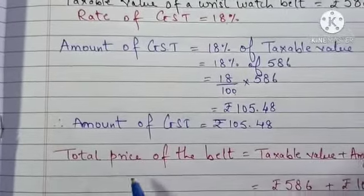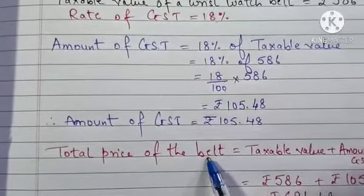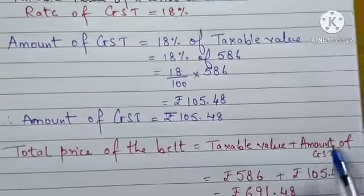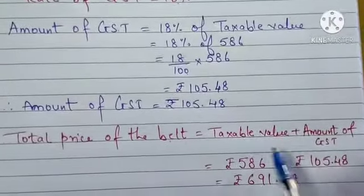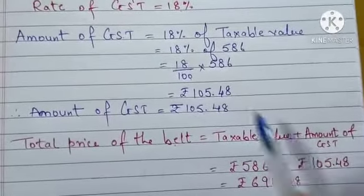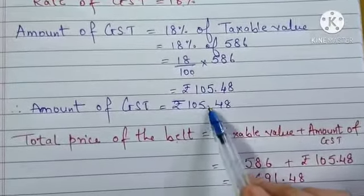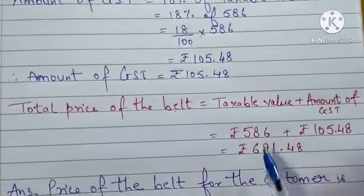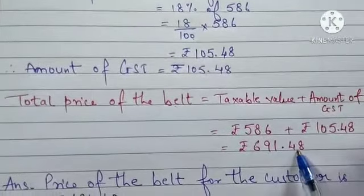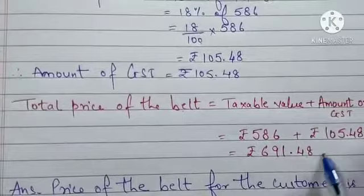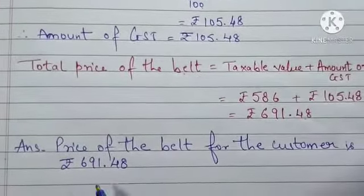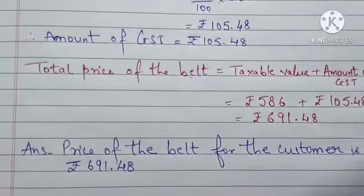Now let's see how much the customer has to pay. The total price of the belt that the customer has to pay is taxable value plus the amount of GST. Taxable value is 586 plus the amount of GST is 105.48. After adding both, we will get Rs. 691.48. Final answer, price of the belt for the customer is Rs. 691.48.